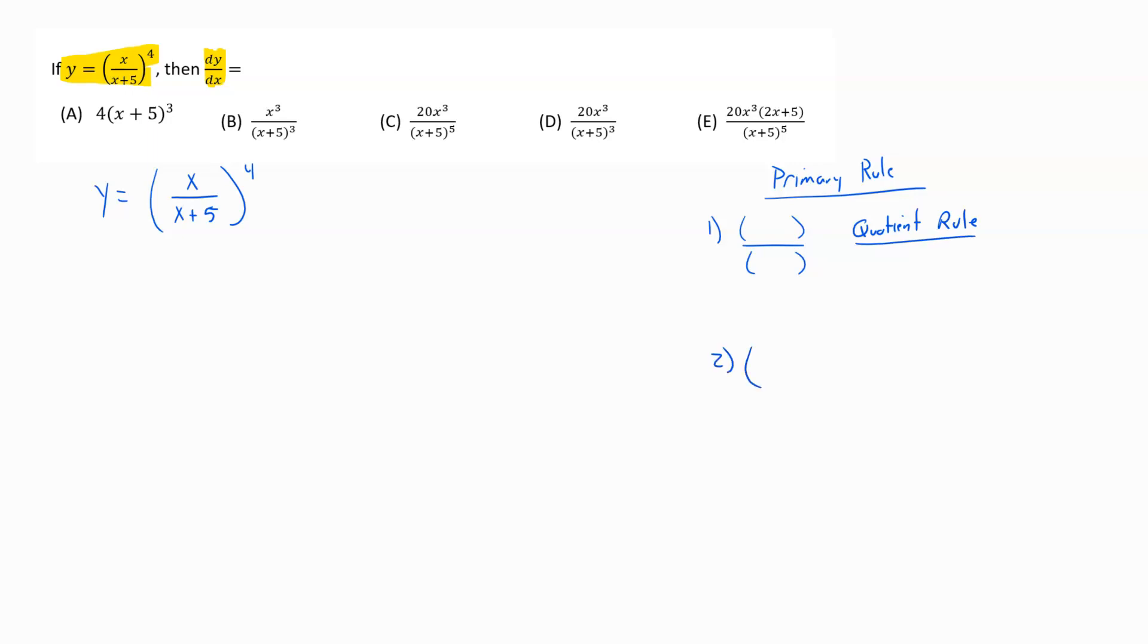Or instead, does the main thing look like a bunch of stuff inside parentheses raised to a power? If that's the main thing, then you're looking at a chain rule. As you squint your eyes and look at this problem, the primary rule, the main rule we should be following is the chain rule. That's first and foremost what's happening.